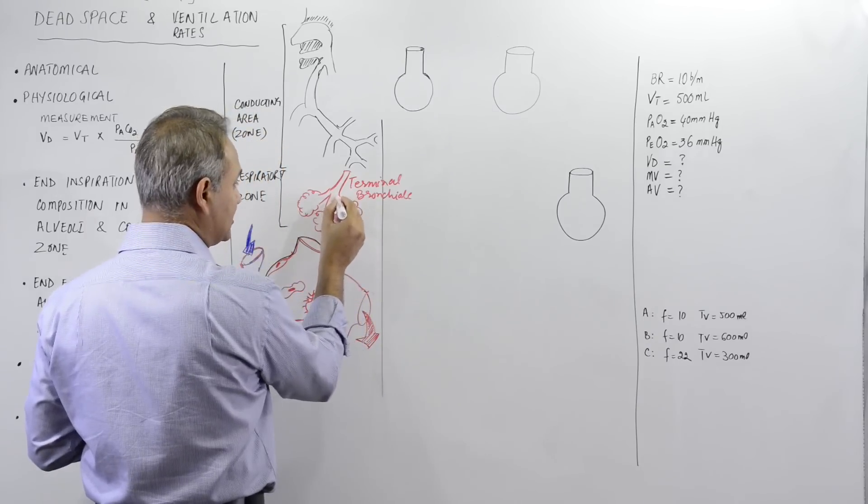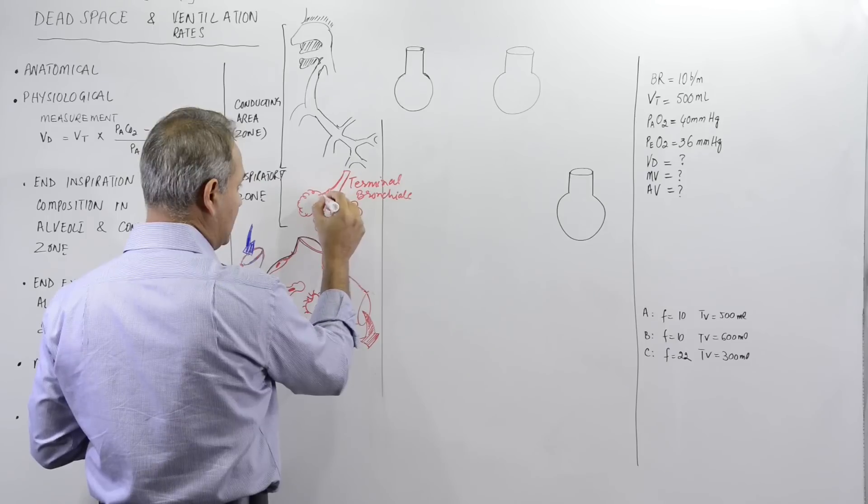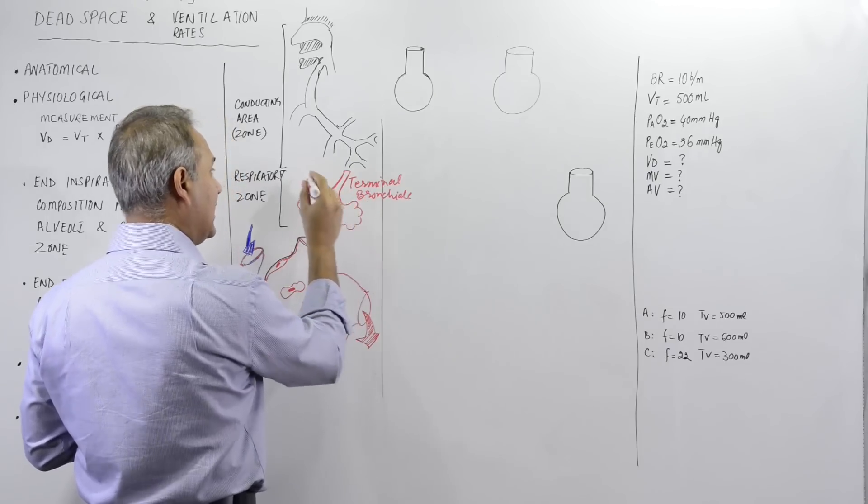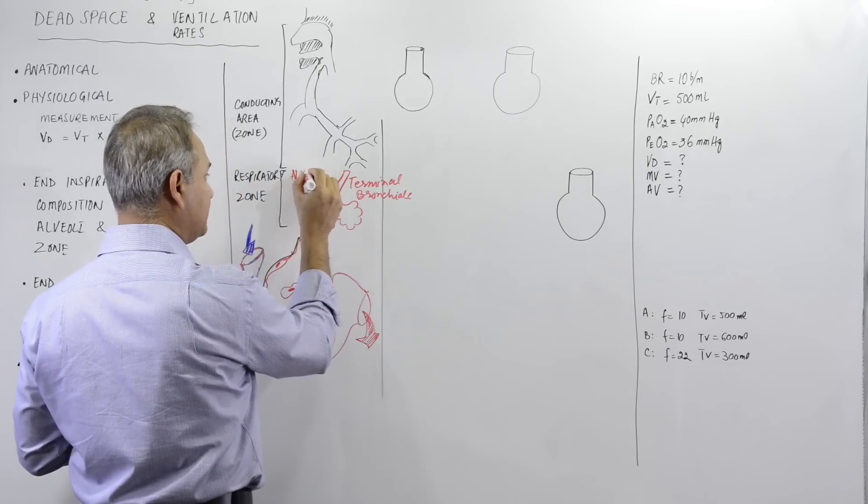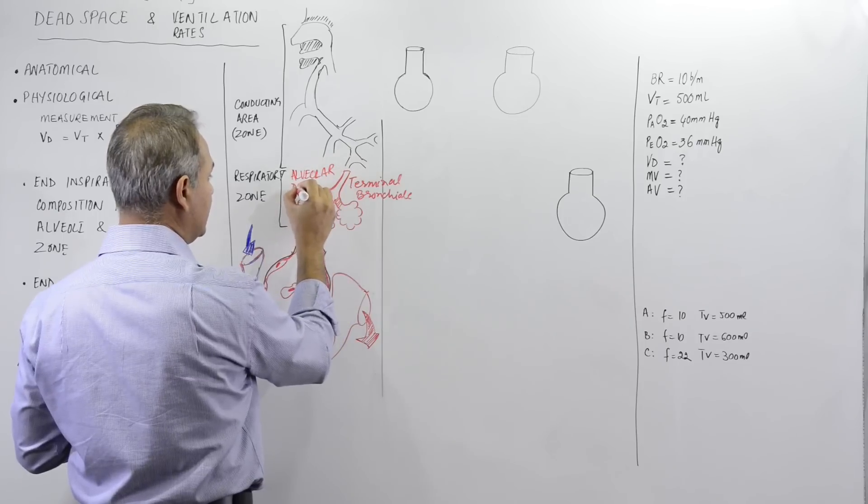Then alveolar ducts, so these are alveolar ducts. Terminal bronchioles, alveolar ducts, alveolar ducts...